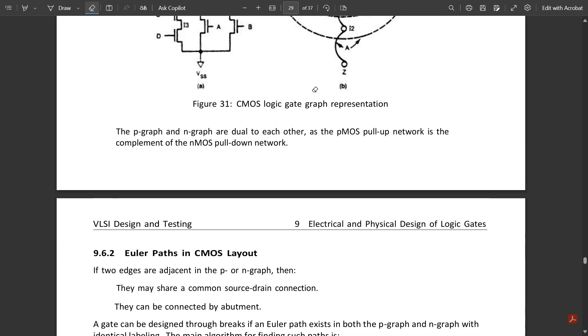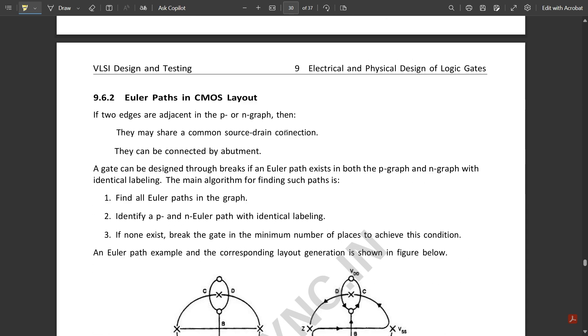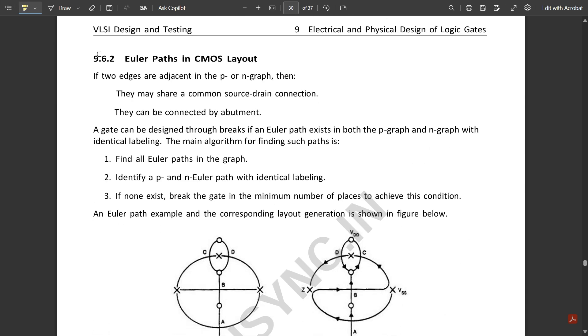The P graph and N graph are dual to each other, as the pMOS pull-up network is the complement of the nMOS pull-down network. In CMOS layout, if two edges are adjacent in the P or N graph, they may share a common source drain connection and can be connected by abutment.